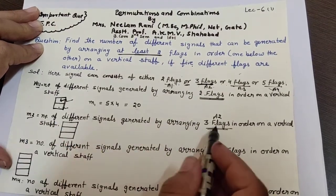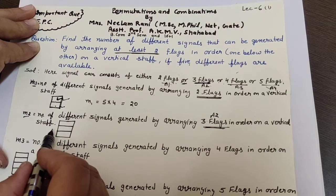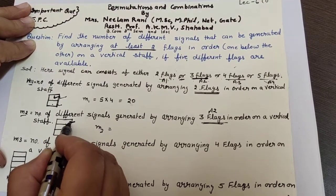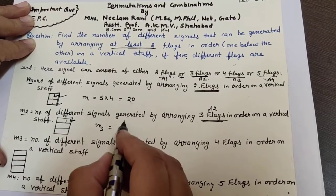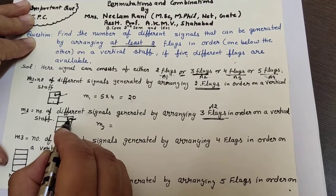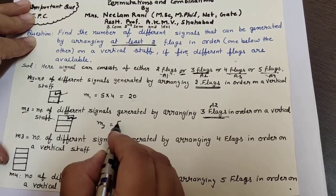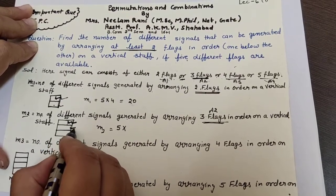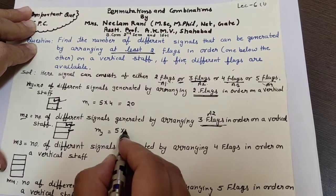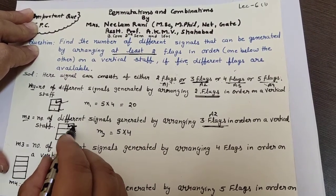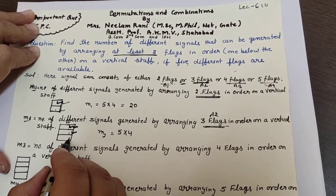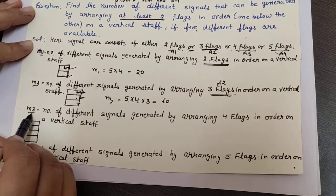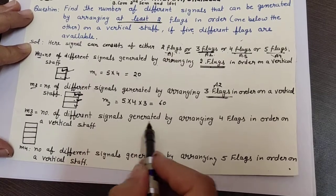For M2, this position can be filled in five ways using the first flag. The second position can then be filled in four ways. With two flags placed, three flags remain, so the third position can be filled in three ways. So M2 = 5 × 4 × 3 = 60.